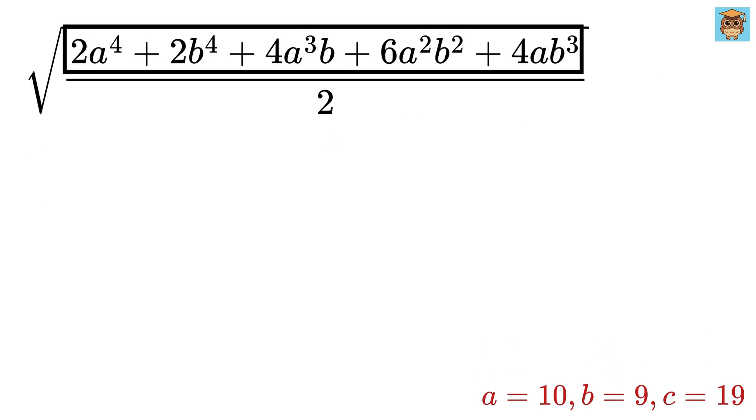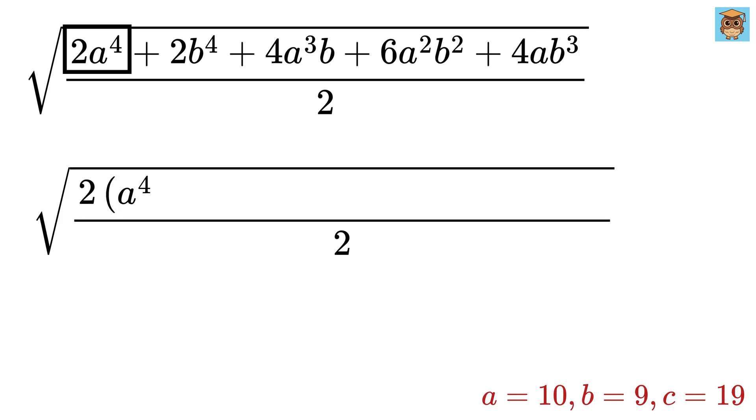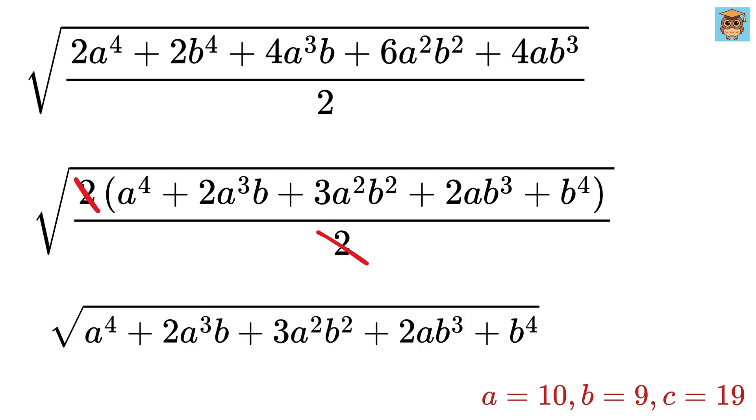Now take 2 as common from all terms inside the expression. This gives us 2 times A to the 4th plus 2 times A cubed B plus 3 times A squared B squared plus 2 times A B cubed plus B to the 4th. Both these twos will get cancelled out, and we are left with this.